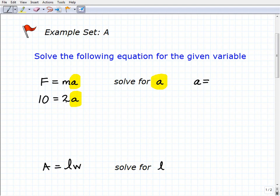I would simply divide both sides of the equation by 2, and I would have A equals 10 divided by 2. And you would be exactly correct.